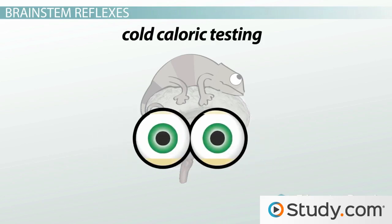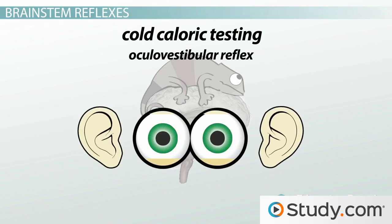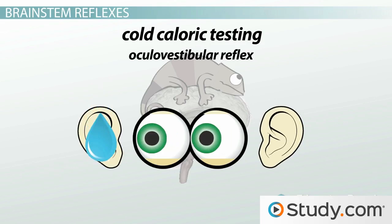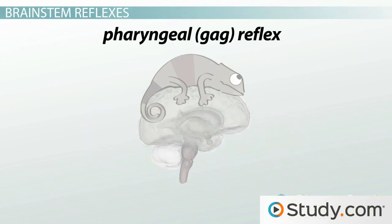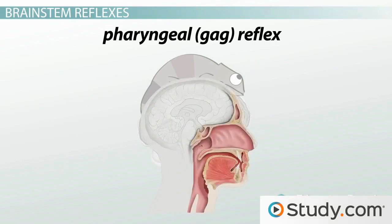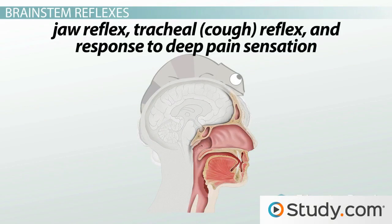Cold caloric testing is a test of the oculo-vestibular reflex, which is when the ear is irrigated with cold water and the eyes should turn towards the side where the ear is being flushed. The pharyngeal gag reflex is where stimulation of the back of the throat produces muscle contractions at the back of the throat. In addition, the jaw reflex, tracheal cough reflex, and response to deep pain sensation are assessed for brain stem function as well.